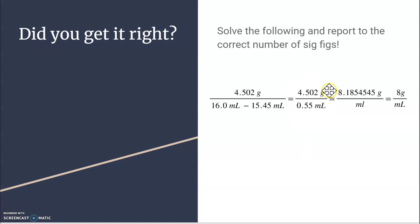So I have four sig figs on the bottom, but only one sig fig on the bottom. So my answer then can only have one significant figure. So all of this rounds back down to eight grams per milliliter.